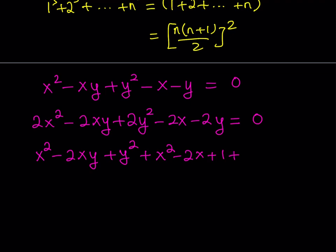I also have a y squared leftover and negative 2y. Similarly, I add 1 to both sides to complete that square. But I had no constants on the left-hand side, so by adding 1 plus 1, I've added 2 to the left-hand side. I have to add 2 to the right-hand side as well — so 0 plus 2 equals 2. This should complete all the squares.